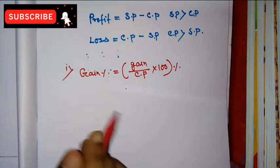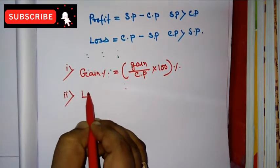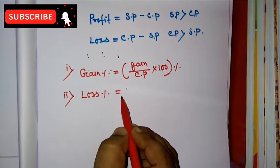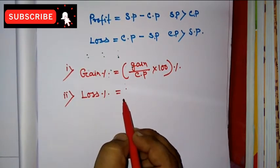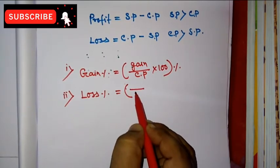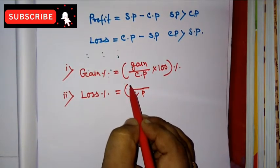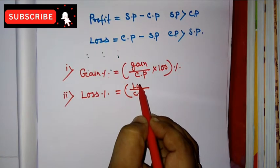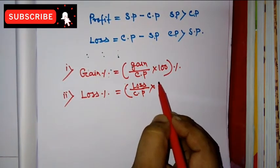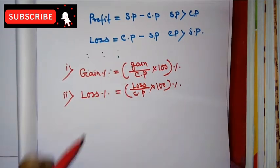Number two: loss percentage formula is loss divided by CP into 100 percent.